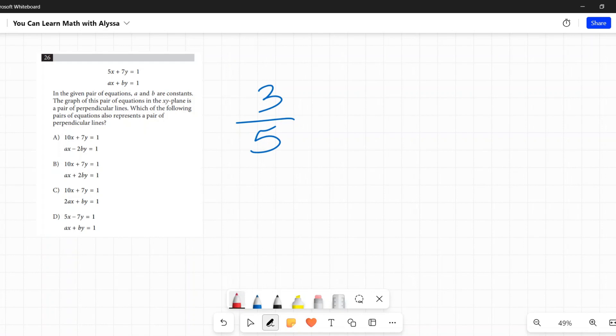It means you take the reciprocal of this, which means you swap the positions of the numerator and denominator. So that becomes five-thirds and then you change the sign. So it was positive here, the perpendicular line's slope will be negative. If this had been negative, this would be positive. They have opposite signs and they are reciprocals.